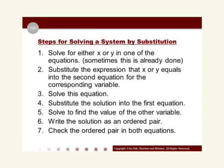Let's go ahead and dive into the steps needed for solving a system by the substitution method. These steps at first may look complicated or intimidating, but after we do a couple example problems, I really think you'll understand them and be able to put them into use pretty easily. Step one: solve for either x or y in one of the equations. Sometimes this is already done for you. In other words, isolate a variable — it doesn't matter which equation or which variable, but the first step is to isolate one variable in one of the equations.